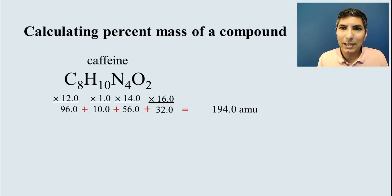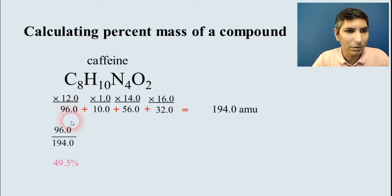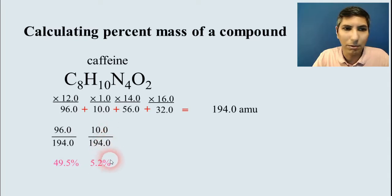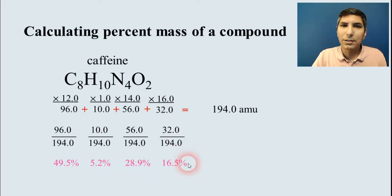And to find the percent mass for each of those individual elements, we just take the individual products for each element and divide by the total. So carbon is 96 divided by 194, which is about 49.5%. And hydrogen is 10 divided by the total, about 5.2%. And nitrogen, the same way. Oxygen is the same way. So this is the percent mass.